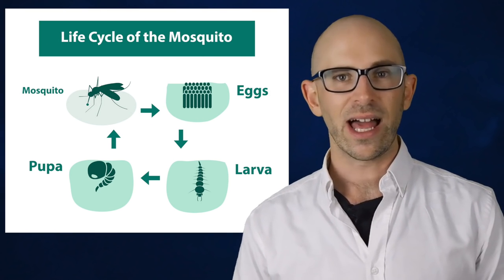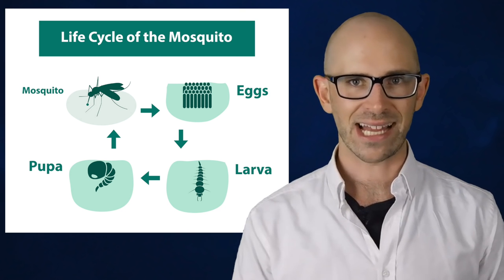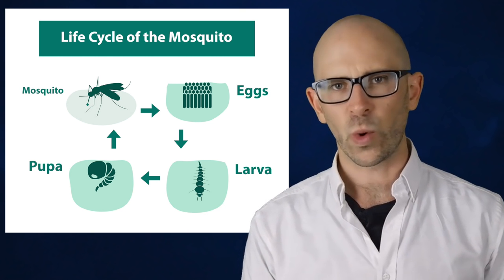And now for some bonus facts. Mosquitoes have four stages to their life cycle: egg, larva, pupa, and adult. During the first three stages, they live entirely in water.